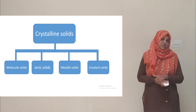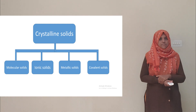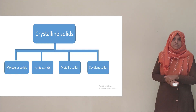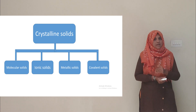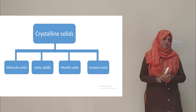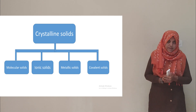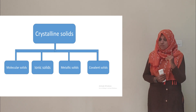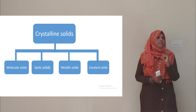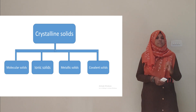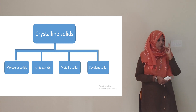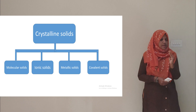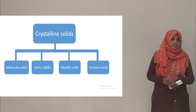Solids can be classified into four types on the basis of the nature of constituent particles and the binding force present in them. They are molecular solid, ionic solid, metallic solid, and covalent solid.